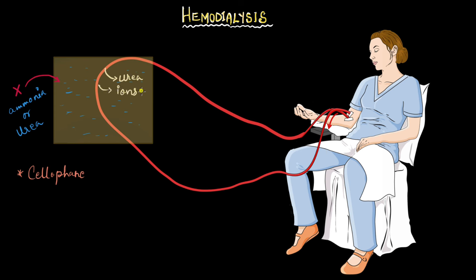But the good things in the blood, like the blood proteins or the cells, cannot move out of the cellophane tube because the pores are not sufficiently big enough, and we obviously don't want them to get out from the blood. So the blood gets filtered here, all the waste is dumped in this chamber, and the filtered blood is then sent back into the patient's body.